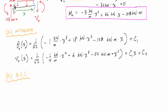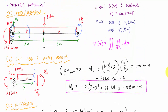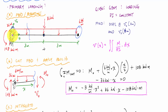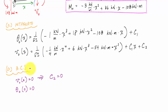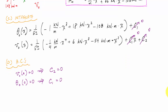The boundary conditions here are simple because I have a fixed end at point A. At x equals zero, the displacement is zero and the slope is zero. Plugging zero into the displacement function tells me C₂ equals zero, and plugging zero into the slope function tells me C₁ equals zero.